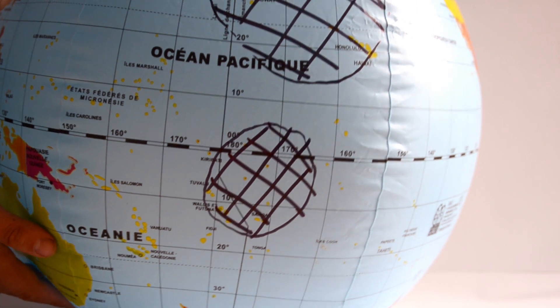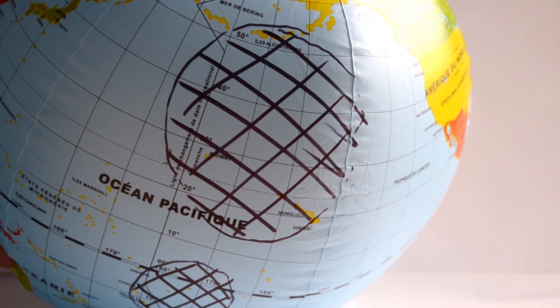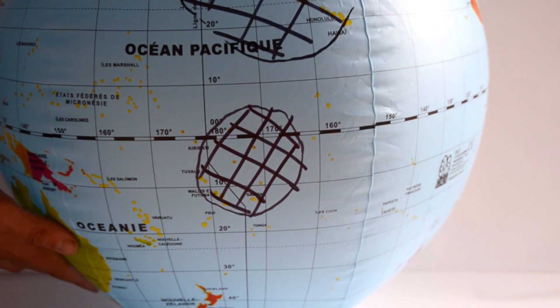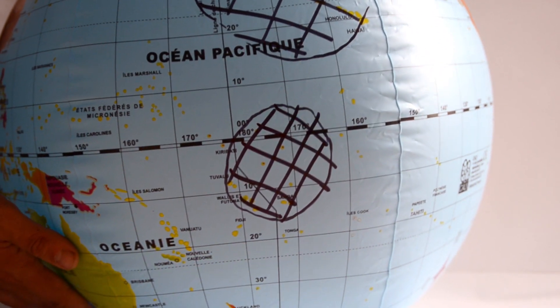It means that the equator receives more energy from the Sun than the North Pole. So the poles are colder than the equator.